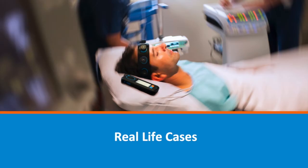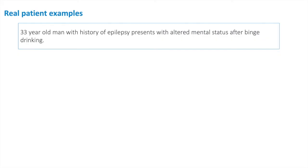Now that I have reviewed some of these patterns, I'd like to end the session with some real-life cases from different hospitals where they have shared the story of their patients with me personally. The first patient is the case of a 33-year-old man who has a confirmed diagnosis of idiopathic primary generalized epilepsy, who had been drinking quite heavily prior to his arrival to the emergency department.